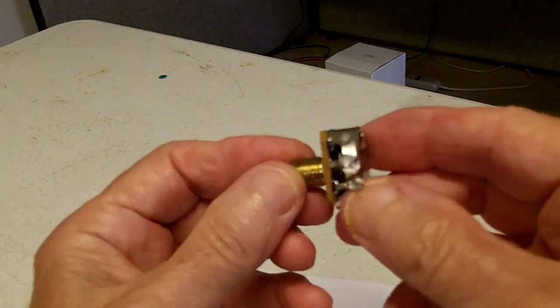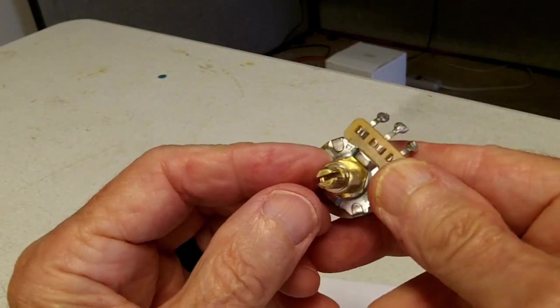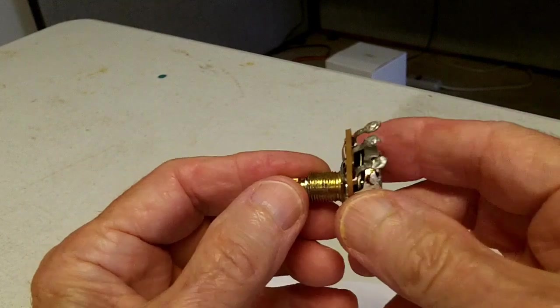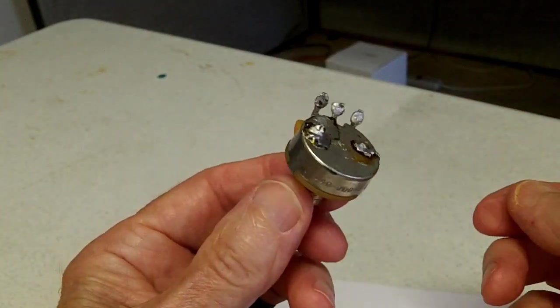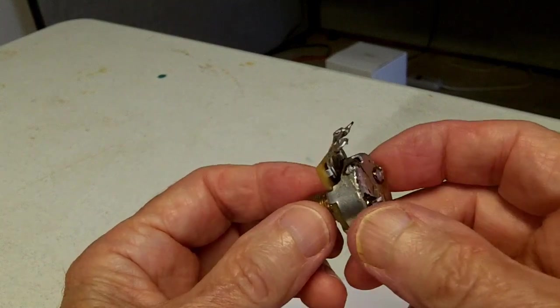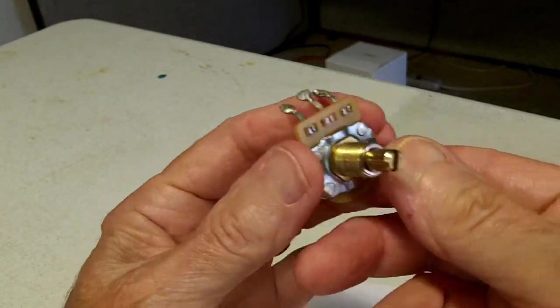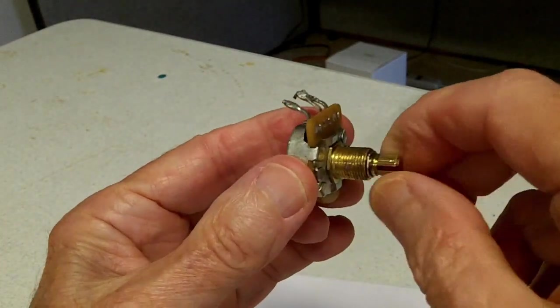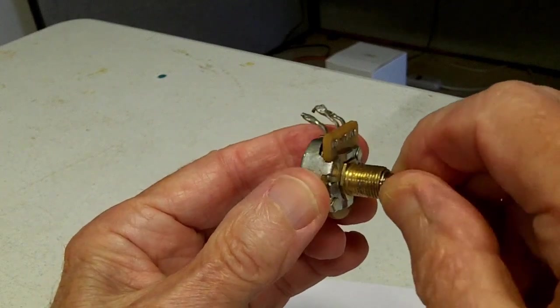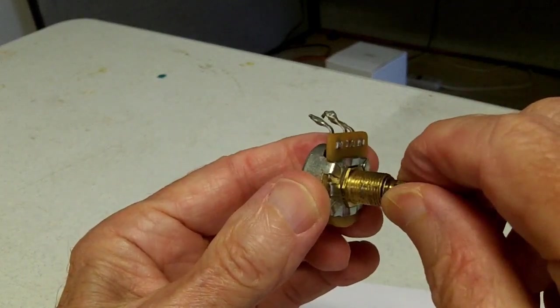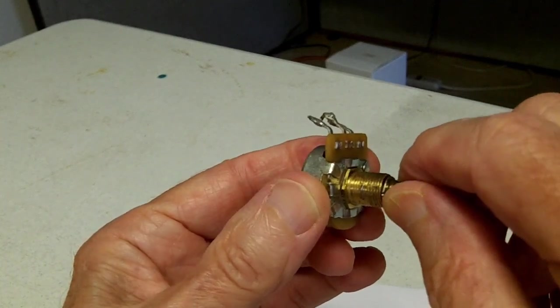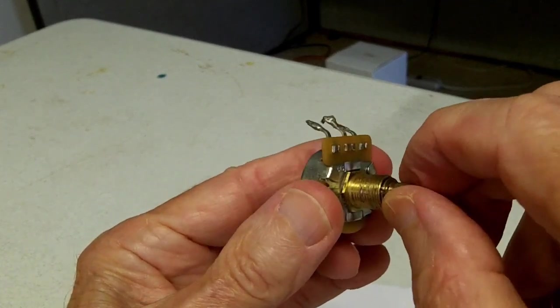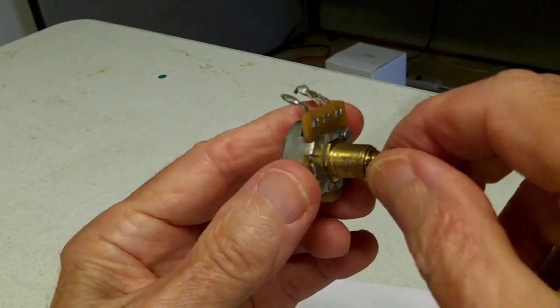I recently replaced this potentiometer in a Fender Stratocaster guitar. It's the volume pot, a 500k pot. The problem was when you turn the knob up, it was very erratic. It might turn the volume up slowly, might not turn it up, and then suddenly it would jump up to full volume.